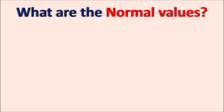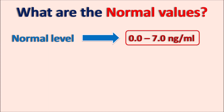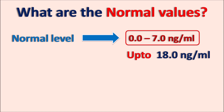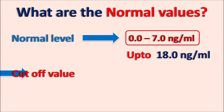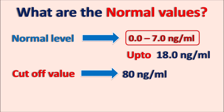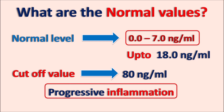Generally, IL-6 is not significantly detected in systemic circulation. Normal levels of IL-6 can be considered as 0.0 to 7.0 nanogram per mL, though some references consider up to 18 nanogram per mL as normal — there is slight variability depending on the assay. A slight elevation in IL-6 values may not always correlate with systemic inflammation, so IL-6 levels should always be correlated with the patient's clinical symptoms. A cutoff value of 80 nanogram per mL is used: values greater than 80 ng/mL indicate progressive inflammation that should be immediately treated.